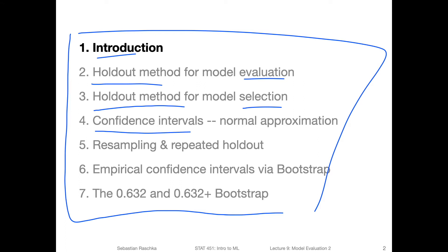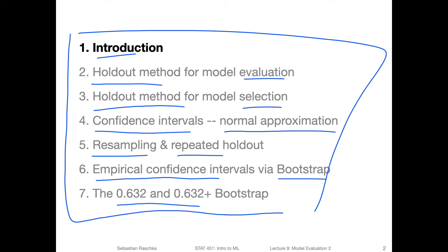The first confidence interval method we'll look at is the normal approximation interval. After that, we will take a look at resampling methods, meaning we are resampling the data set. We will look at the repeated holdout method, where we apply the holdout method on resampled versions of the training set. Then we'll look at empirical confidence intervals, which are also based on resampling. Here we will encounter a familiar technique - the bootstrap technique discussed in the bagging and ensemble model lecture. After that, we'll look at two improved versions of the bootstrap method for model evaluation: the 0.632 bootstrap and the 0.632+ bootstrap.